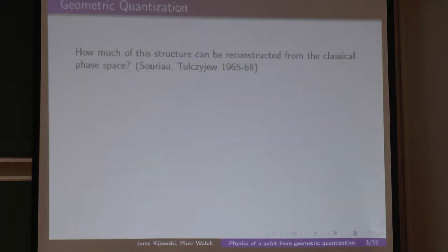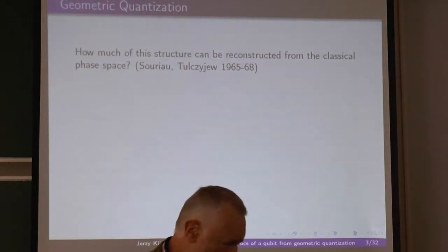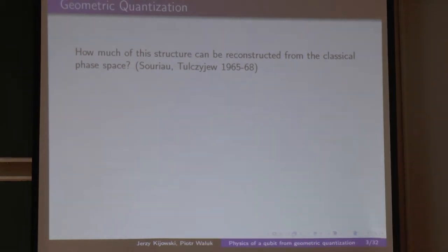Geometric quantization was an attempt to understand how much of this structure can be reconstructed from the classical phase space. And I will show you that the failure was not total.